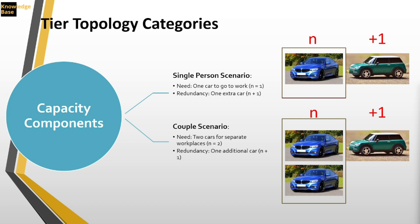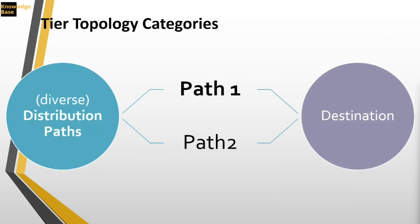Now let's look at path diversity. We have the capacity component, and path diversity means the way I want to deliver power should go through two different paths. If I have a single power panel where two UPS systems meet, that's a single path — I lose the redundancy in the path and don't have path diversity. These two topology categories define the data center tier level.